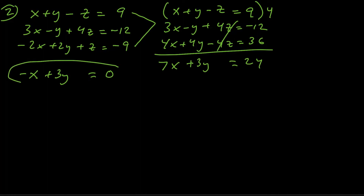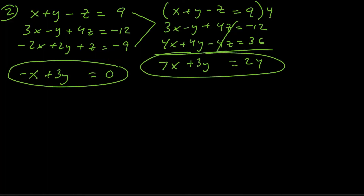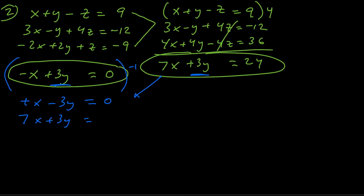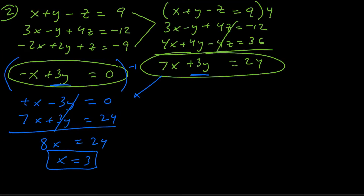We're now down to two variables and two equations. I'll eliminate the y's — both equations have 3y, so I multiply one by negative 1 to get negative x minus 3y equals 0. Bringing down the other equation, 7x plus 3y equals 24, and adding straight down: the y's cancel, giving 8x equals 24. Dividing by 8, x equals 3.